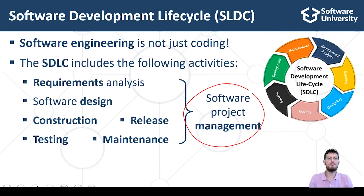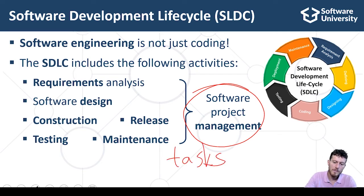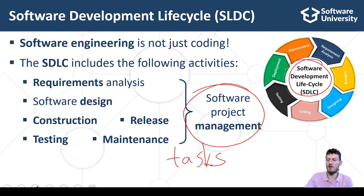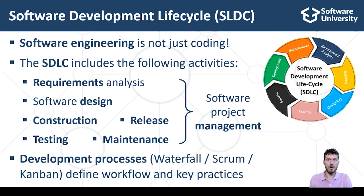Software project management is responsible for the planning, scheduling, resource allocation, execution, tracking and delivery of software projects. Project managers or software team leaders are responsible for defining tasks, prioritizing and scheduling them, and controlling the work progress during the entire software development lifecycle. Project management is very important for the success of any software project, so it needs experienced people to handle it responsibly.